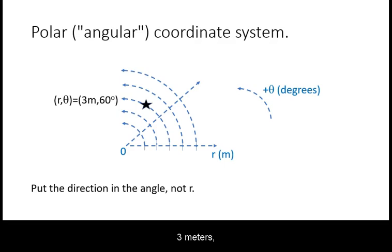3 meters at 60 degrees up from the right is equivalent to negative 3 meters at 240 degrees, but the large number and the negative sign for the direction will be more confusing than using smaller numbers and putting the direction all in the angle.